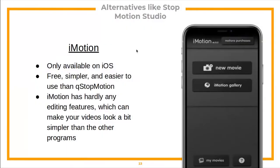The next alternative is iMotion, which is only available on iOS — iPhones and iPads. It's free, simpler, and easier to use than Cue StopMotion and Stop Motion Studio. However, iMotion has hardly any editing features, which can make your videos look simpler and more plain than the other programs.